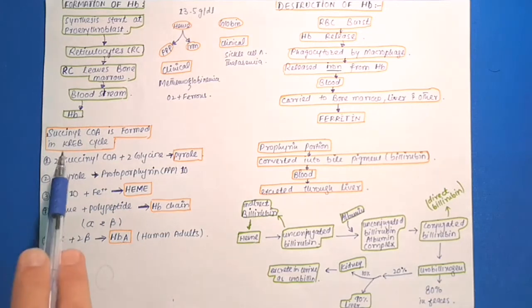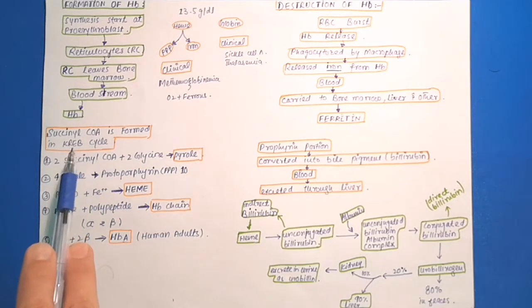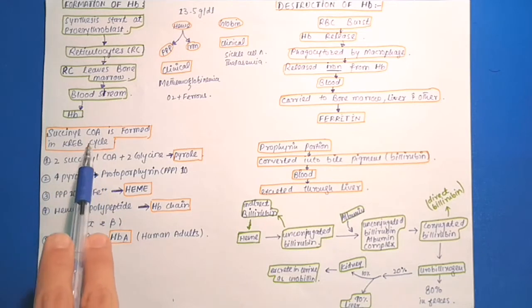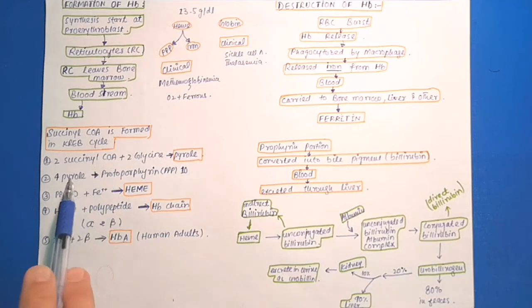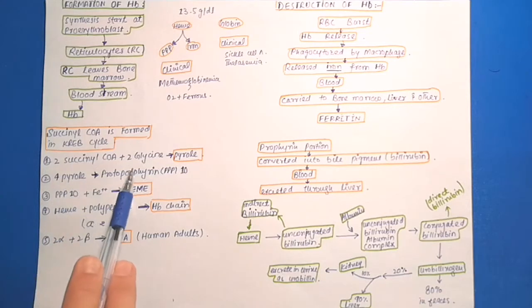The basic chemical steps in formation of hemoglobin: first, succinyl coenzyme A formed in the Krebs cycle binds with glycine to form pyrrole. When four pyrroles combine, they form protoporphyrin-9.